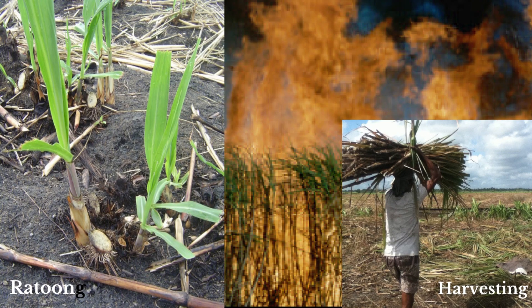Farming practices on Guyana's cane fields include preparation of the land, planting of the cane, managing the crop while it grows, and finally harvesting the cane before transporting them by canal to the factories. Before planting the sugarcane, flood fallowing is often practiced, where fields are flooded for months to wash out harmful salts, kill weeds, and replenish soil fertility. This reduces the use of herbicides and fertilizers.